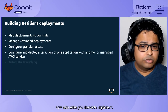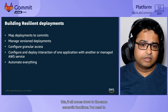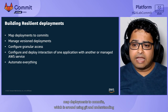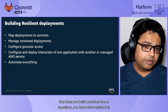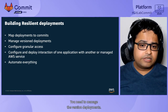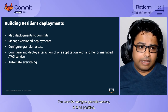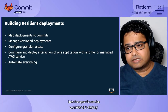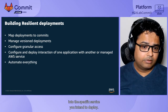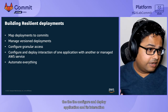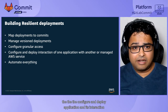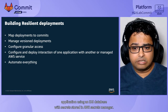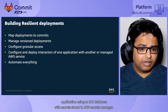However you choose to implement this, it all comes down to the same semantic functions. You need to map deployments to commits — using Git and understanding that when you build a container from a repository you know what version it is. You need to manage versioned deployments with granular access so that the right version gets into the specific service you intend to deploy. You also need to configure and deploy applications and their interactions with other services, or even AWS-managed services — for example, an application using an RDS database with secrets stored in AWS Secrets Manager.